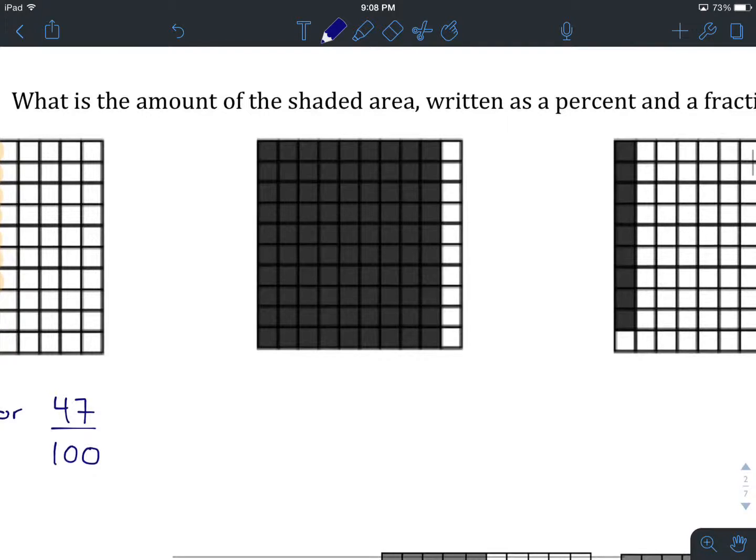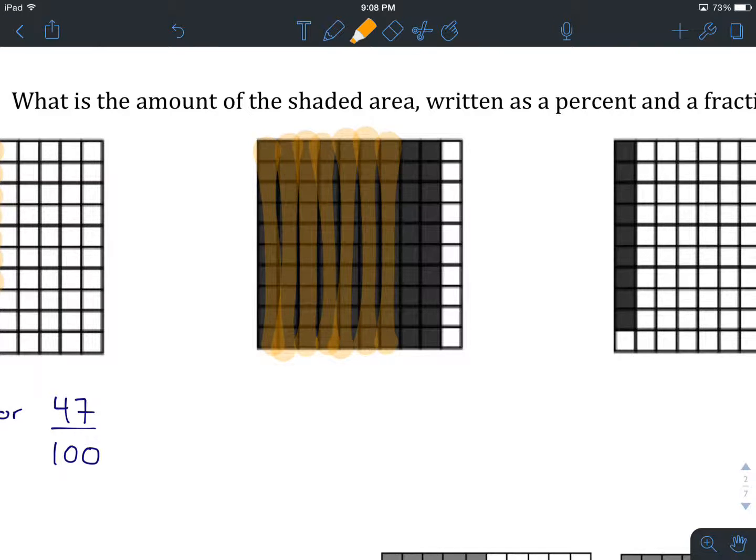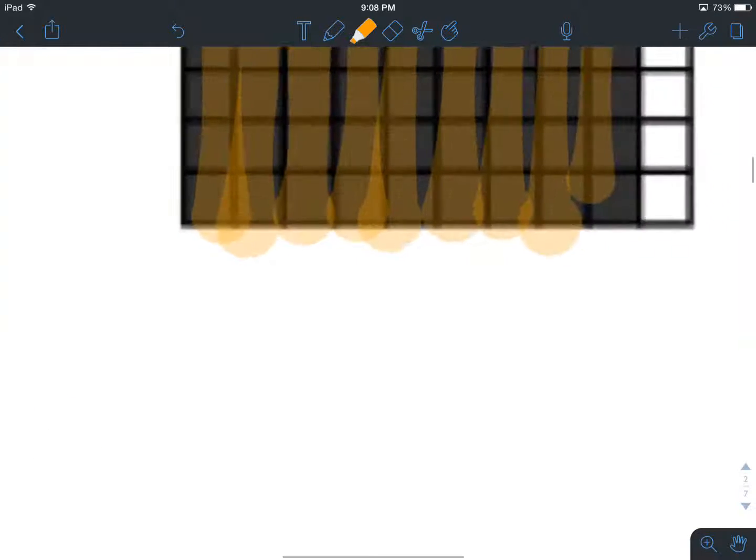Okay, you're back. Hopefully you have counted up 90 squares. That's 1, 2, 3, 4, 5, 6, 7, 8, 9 rows of 10 different squares shaded in. That's going to give us our 90.